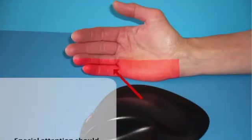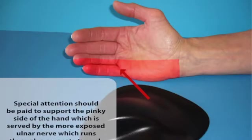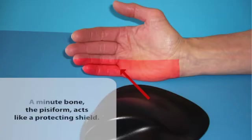Special attention should be paid to support the pinky side of the hand, which is served by the more exposed ulnar nerve, which runs through a separate tunnel. A minute bone, the pisiform,